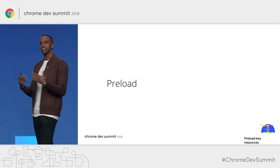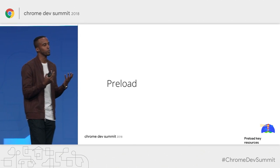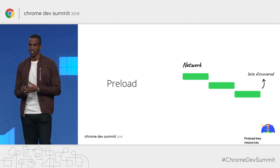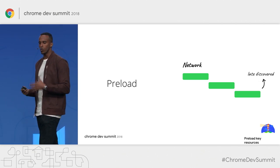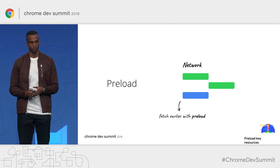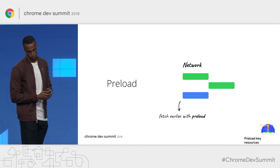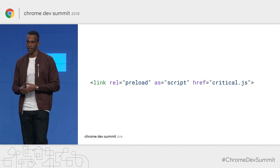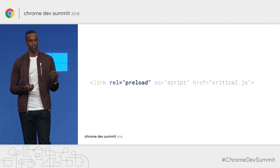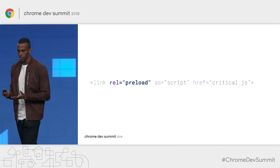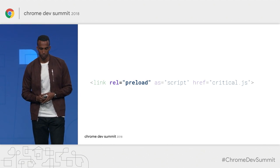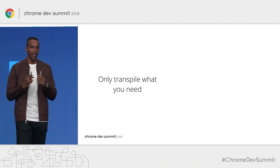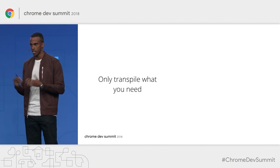Another very useful technique that ties in well with code splitting is using preload. Preload allows us to tell the browser that if we have a late-discovered resource — one that's fetched late in the request chain — we would like to download it sooner because it's important. By doing this, we're telling the browser to prioritize it. To use preload, you only need to add a link element to the head of your HTML document with a rel attribute of preload, and an as attribute to define what type of file you'd like to load.